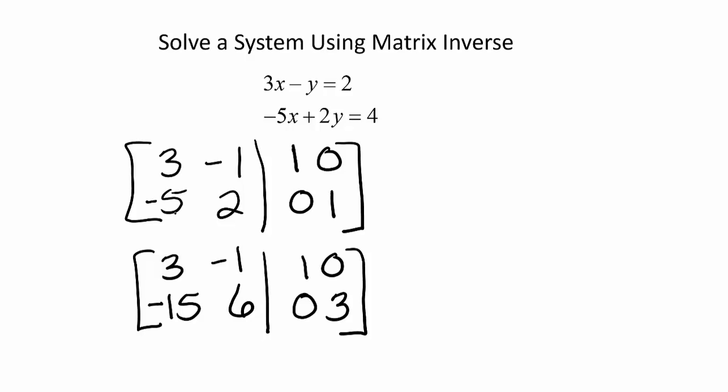Now we will multiply the first row by 5 and add to the second row to get a new second row. Notice our first row has not changed. 3 times 5 is 15, added to the negative 15 gives us 0. Negative 1 times 5 is negative 5, added to 6 gives us 1.